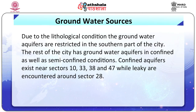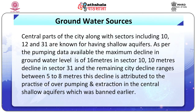Due to lithological conditions, groundwater aquifers are restricted in the southern part of the city. The rest of the city has groundwater aquifers in confined as well as semi-confined conditions. Confined aquifers exist near sectors 10, 33, 38, and 47, while leaky aquifers are encountered around sector 28. Central parts of the city, including sectors 10, 12, and 31, are known for having shallow aquifers. As per pumping data, the maximum decline in groundwater level is 16 metres in sector 10, 10 metres in sector 31, with the remaining city showing declines between 5 to 8 metres. This decline is attributed to over-pumping and extraction in the central shallow aquifers, which was subsequently banned.